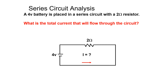Here is a simple Ohm's Law example showing the relationship between voltage, current, and resistance. Can we use Ohm's Law to determine how much current will flow through a circuit powered by a 4-volt battery with a 2-ohm resistor? Ohm's Law tells us that voltage equals current times resistance, so current equals voltage divided by resistance. Thus, current equals 4 volts divided by 2 ohms, which equals 2 amps.